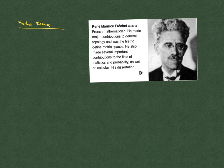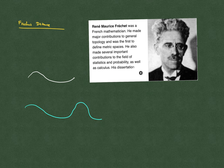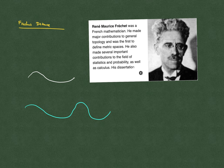The Fréchet distance was introduced by René-Marie Fréchet, a French mathematician. To intuitively understand this concept, consider two curved paths that are finite. A person is walking his dog — the person traverses one path and the dog traverses another. The ordering matters, so they cannot walk backwards; they go from start to finish, their speeds can vary, and one curve may be longer than the other.